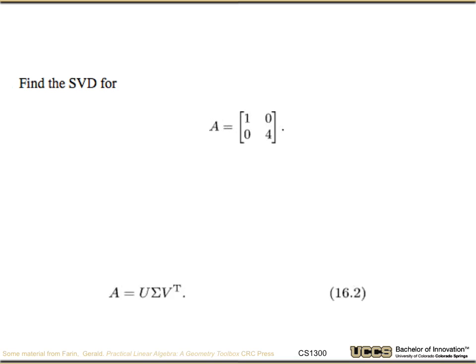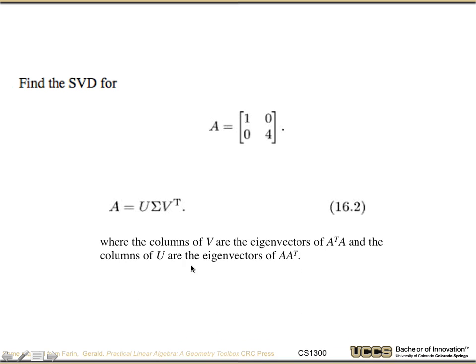Okay, you're back. So hopefully you start off recognizing that our matrix A in our singular value decomposition is the product of three matrices, U, sigma, and V transpose, where U and V are orthonormal matrices and sigma is diagonal. In fact, the columns of V are the eigenvectors of A transpose A, and the columns of U are the eigenvectors of AA transpose. Now how do we go about forming that?